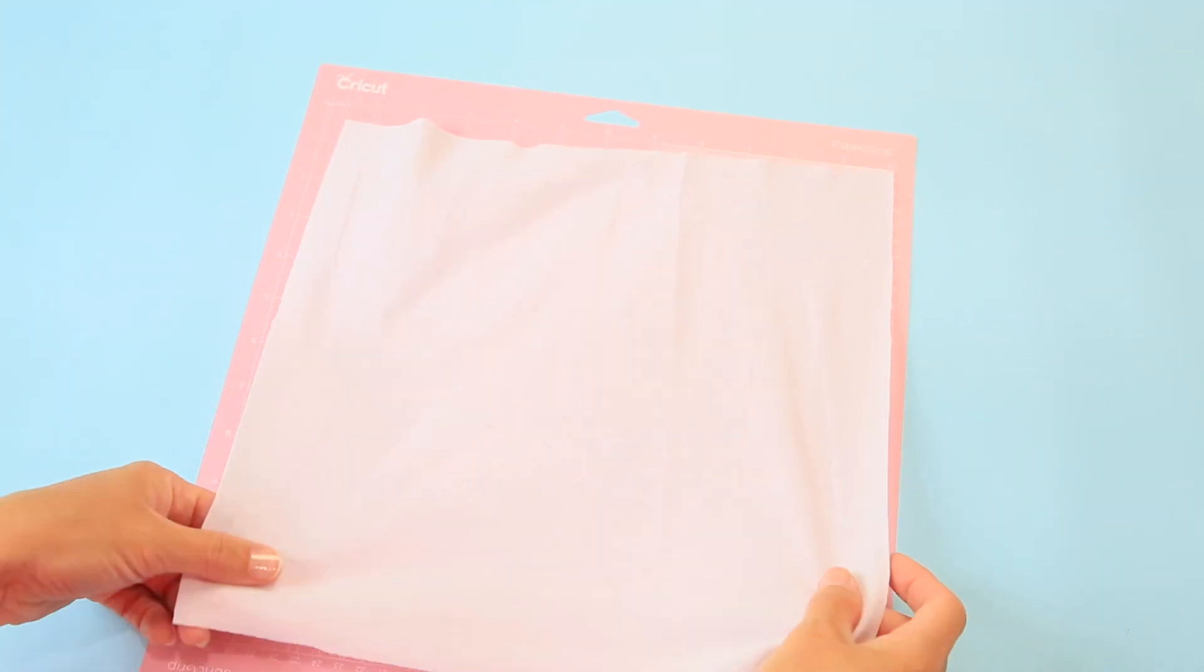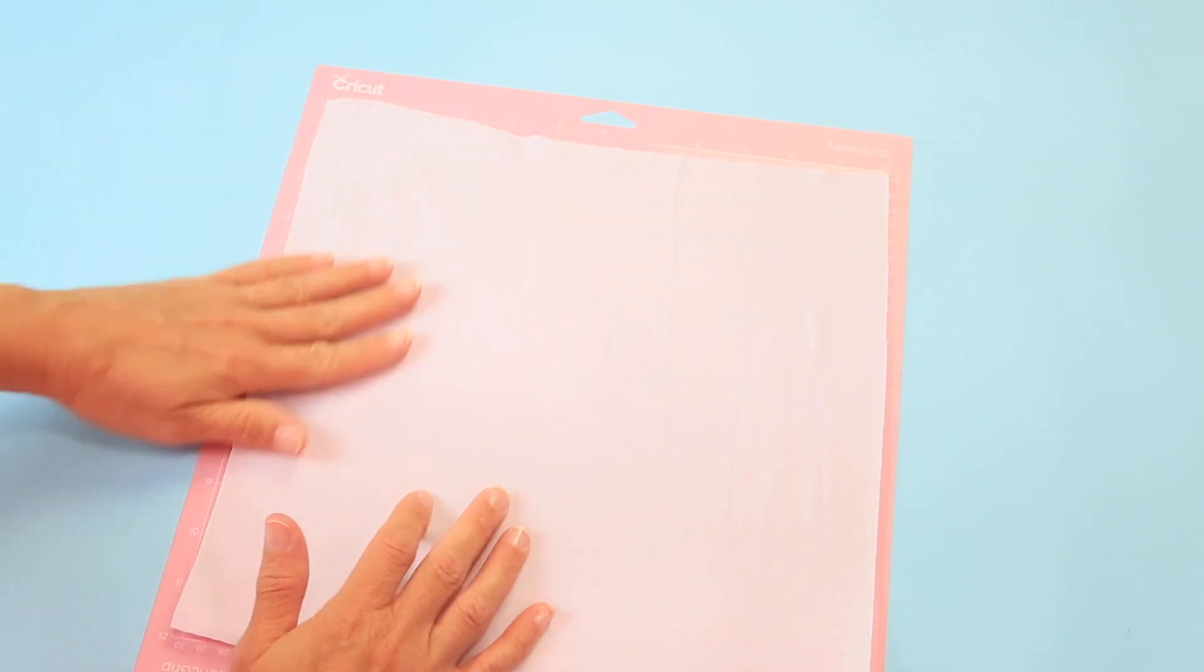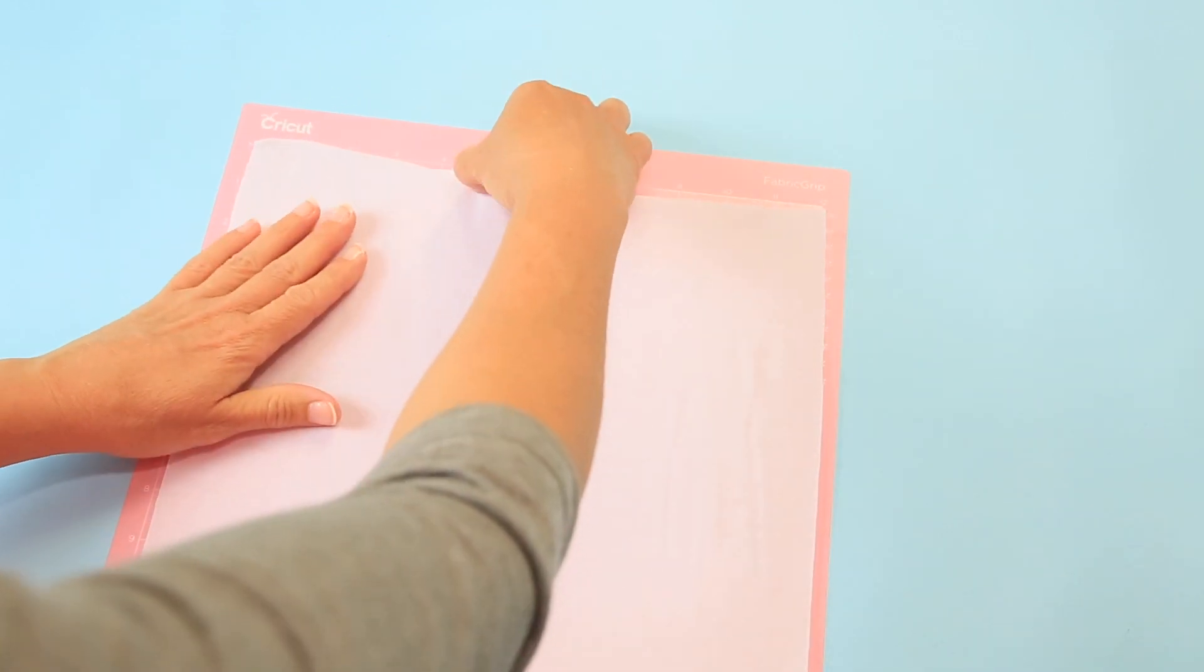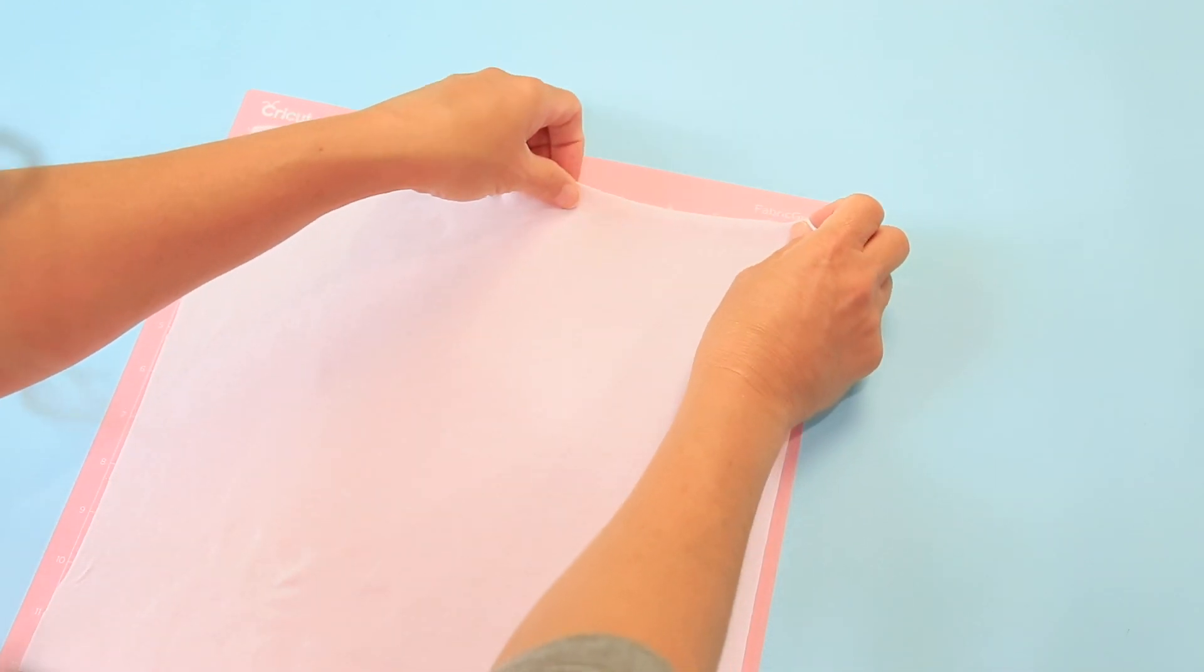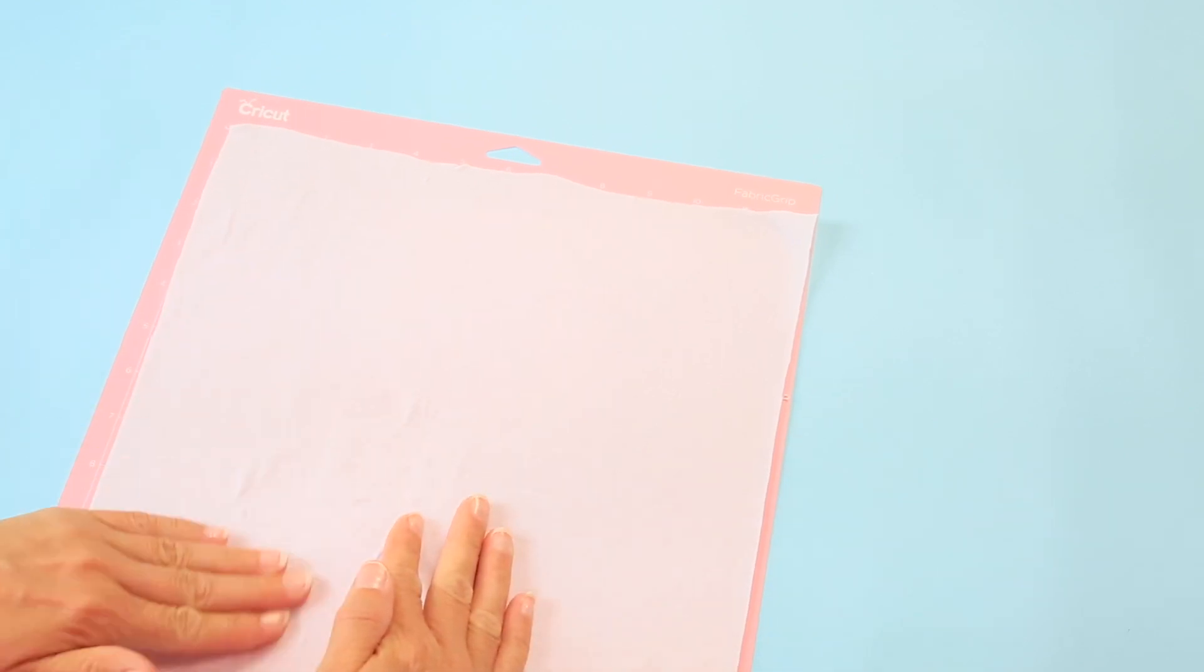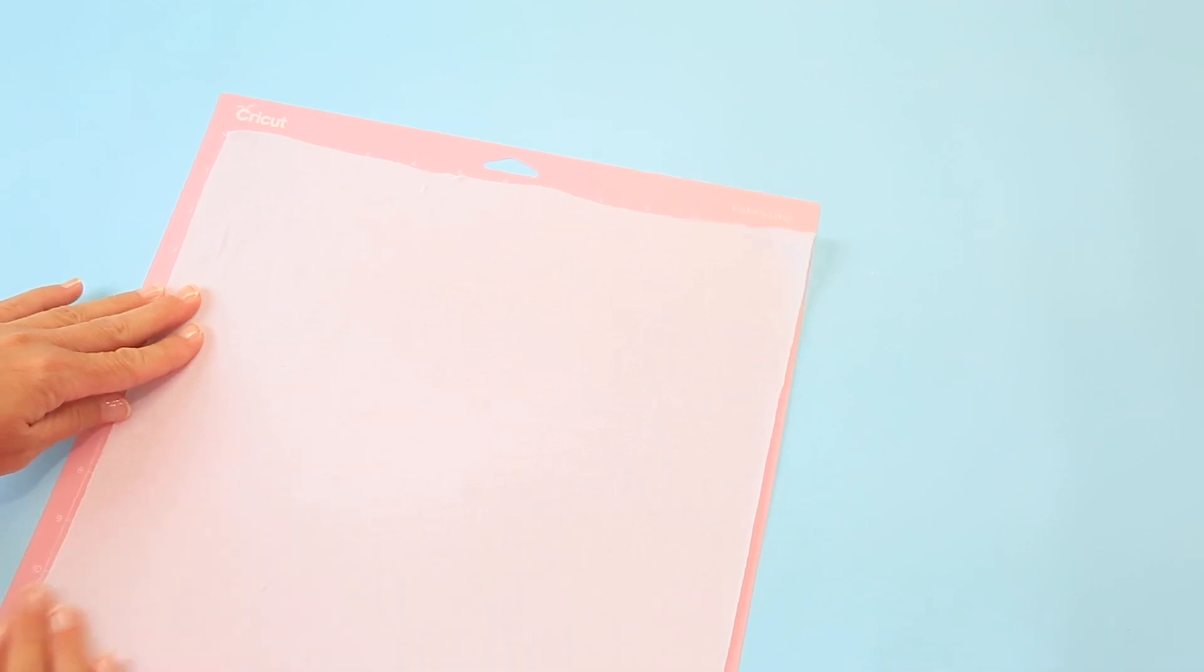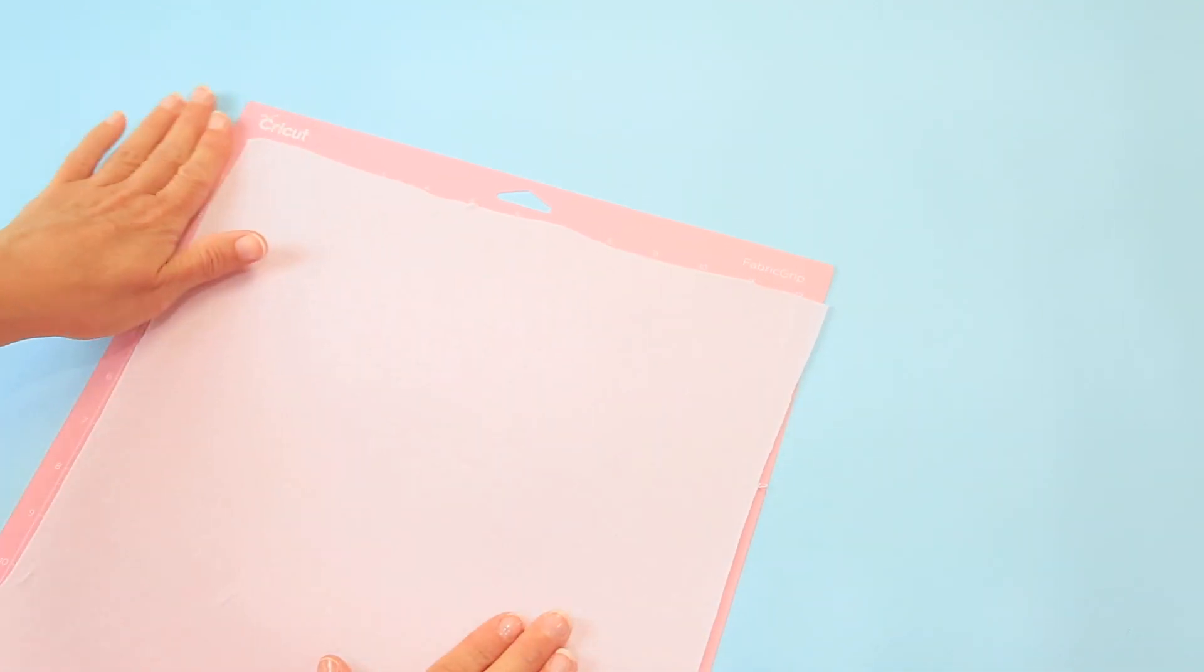One thing I don't have which I wish I had and I'm going to have to get is a brayer. And so basically brayers are great when you're putting fabric on these mats to sort of get out all the wrinkles and all that kind of thing. Okay so we'll put it onto the mat. We're just going to have to kind of do it with our hands. Some fabrics are easier to work with than others when it comes to that. So okay so we have it on the mat and so let's take it over to the Cricut Maker and cut!